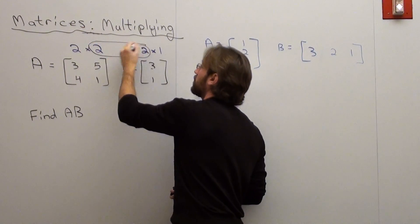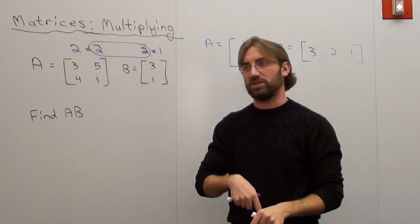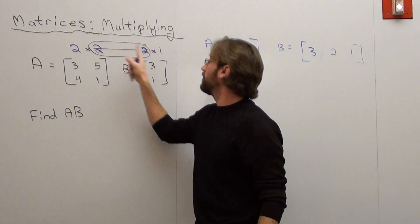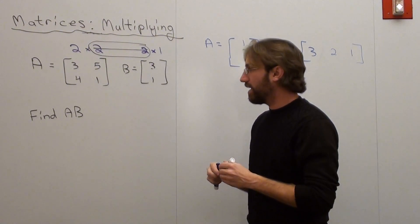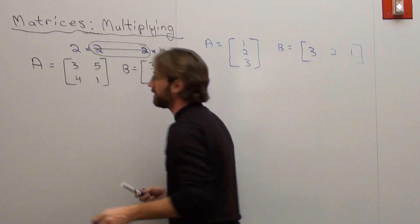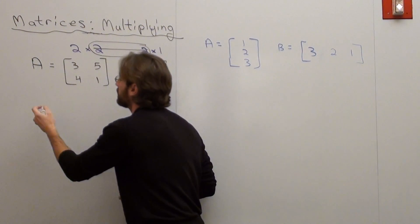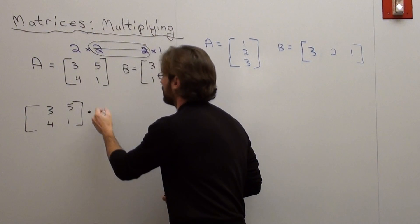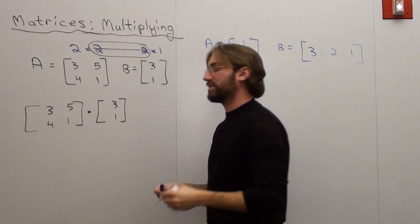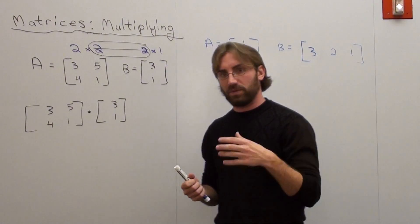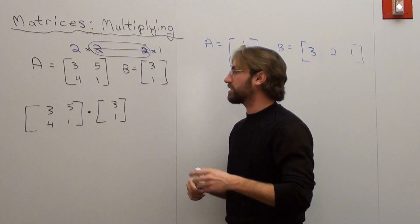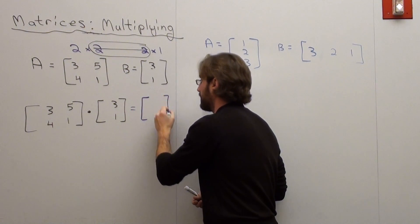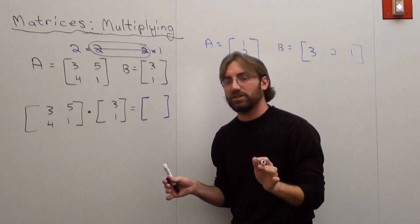So they do. Circle them to make sure they match. If they do, you can multiply them. If they don't, don't do the problem. Since they match, I cross them out, and my resulting matrix is going to be the numbers left over: 2 by 1. That's going to be my answer when I multiply this out. We're going to find A times B.